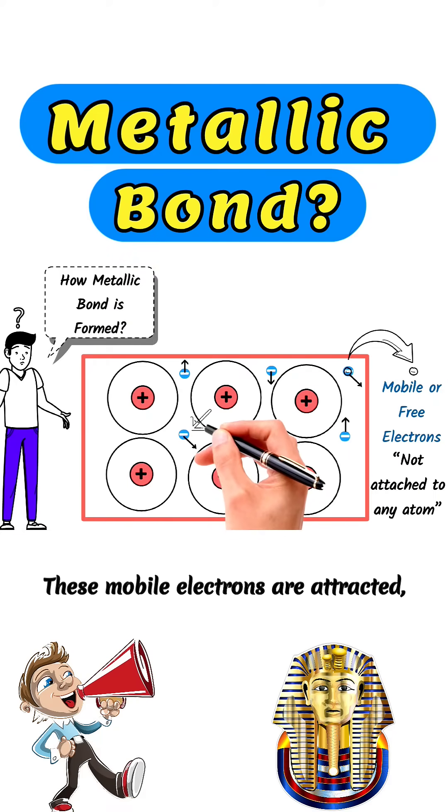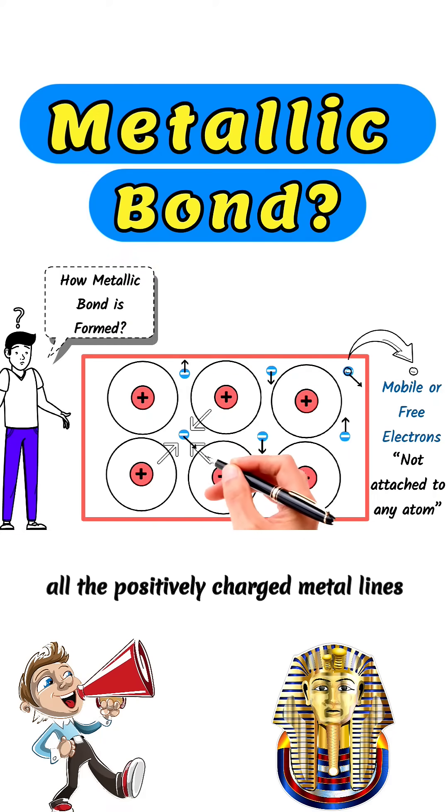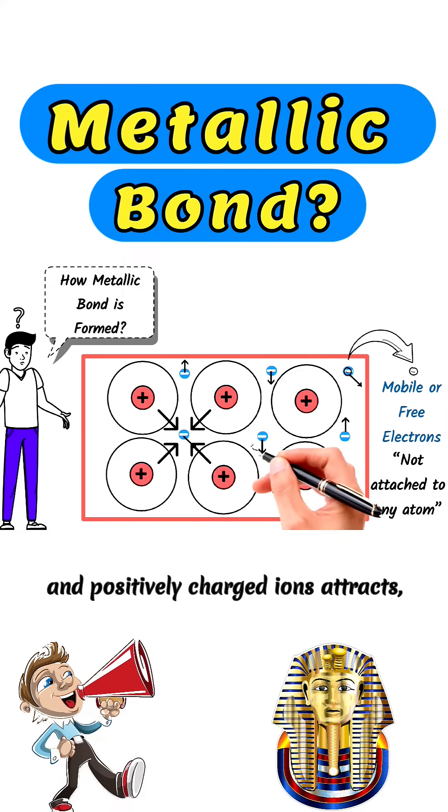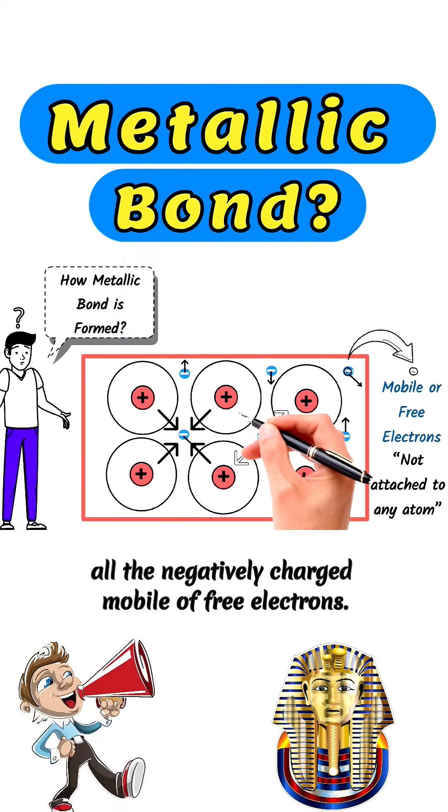These mobile electrons are attracted to all the positively charged metal ions, and positively charged ions attract all the negatively charged mobile or free electrons.